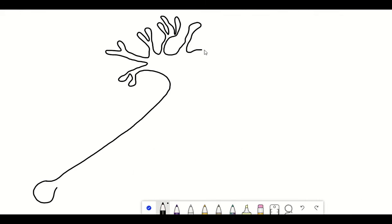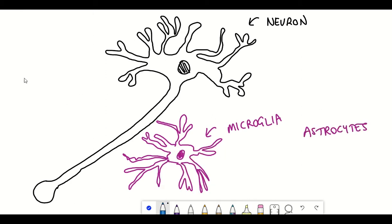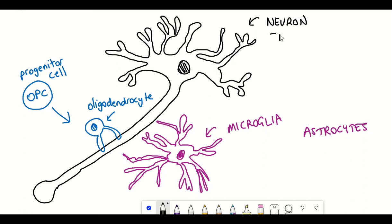The brain isn't just composed of neurons, it's also composed of glial cells and these cells include astrocytes, microglia and oligodendrocytes and the precursors for these oligodendrocytes, OPC cells.